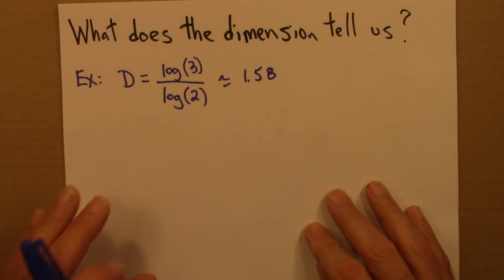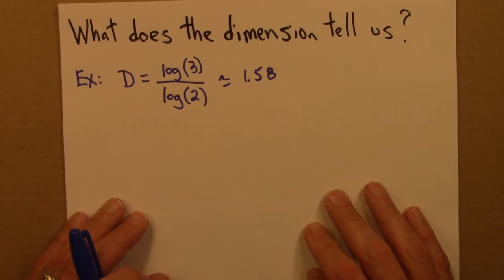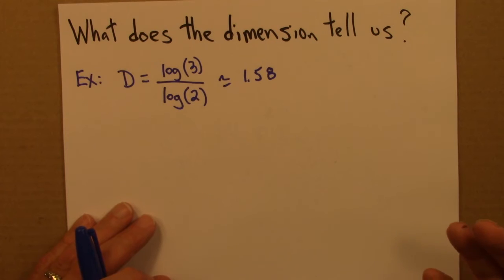So we've talked about how to calculate the dimension. I think it's interesting also to imagine this in the other direction. What if we're told the dimension and we don't know the object or the shape? What can we figure out about the shape if we only know the dimension?